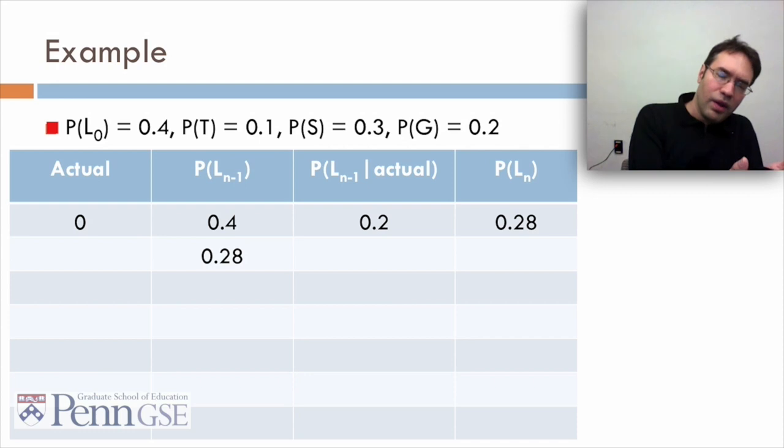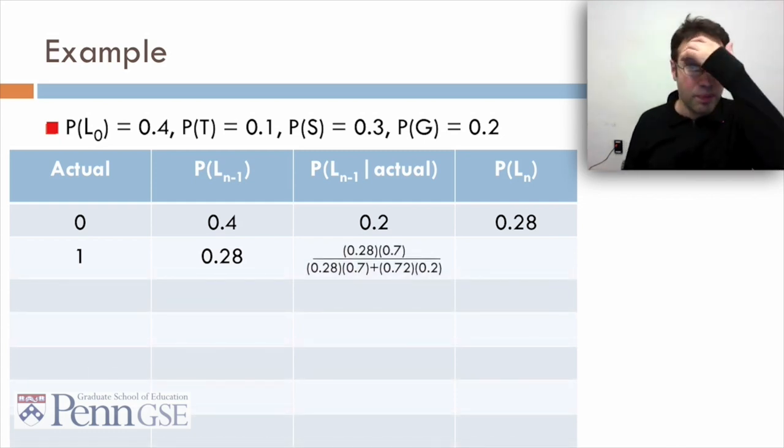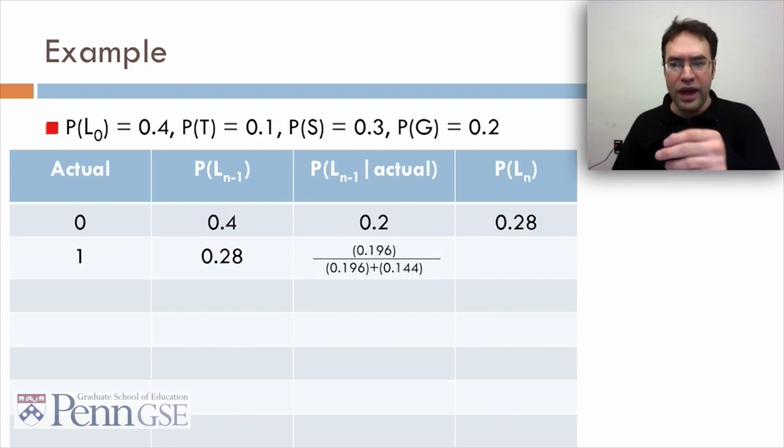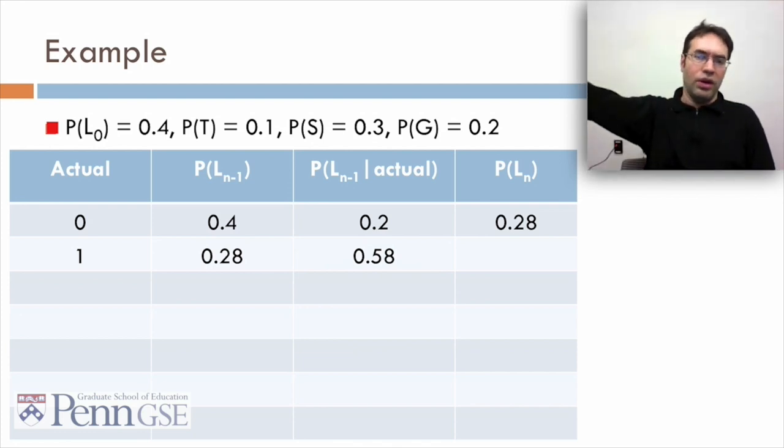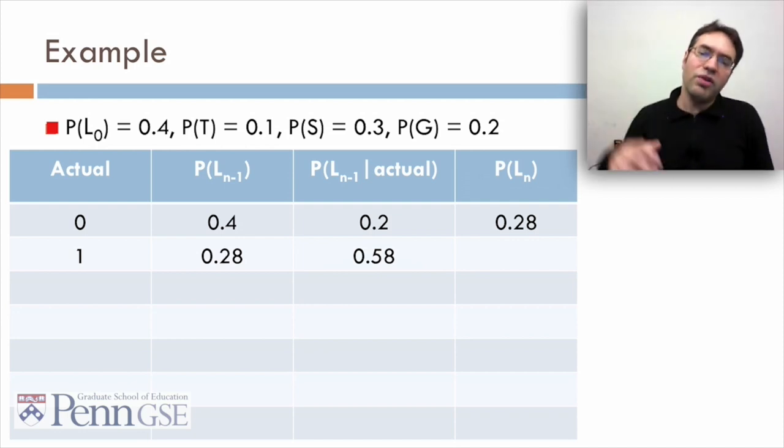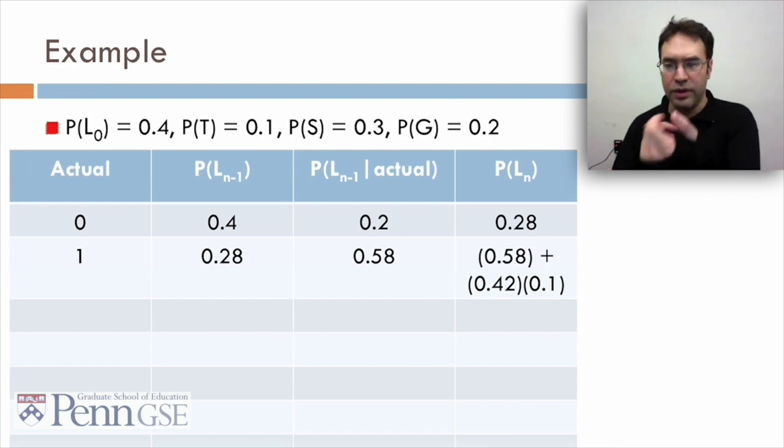So now we move that down, and that becomes the probability they knew it before the second action. Let's say the student gets the action right. In that case, the probability that they knew it before they got it right is the probability that they had known it and hadn't slipped over that probability plus the probability they didn't know it and they guessed. That turns into 0.58. So you can see when they got it wrong, they went down from 0.4 to 0.2, which came up to 0.28. And then that 0.28, after they got it right, was reassessed to be 0.58. These are pretty big changes, and that's because the probabilities of slip and guess are pretty low in this model. So then the probability that they knew it afterwards is the probability that they knew it beforehand plus the probability that they didn't know it times the probability they learned it, which comes out to 0.62.